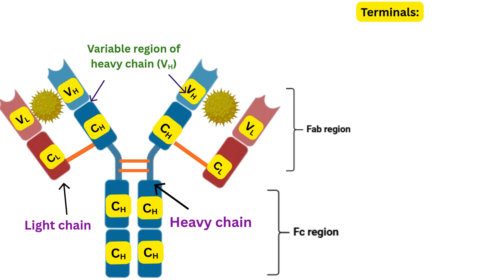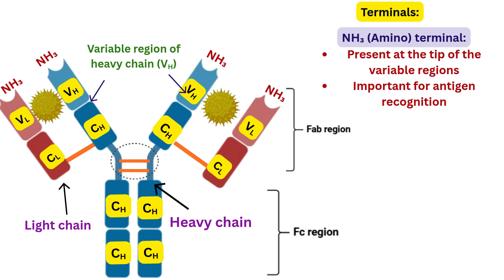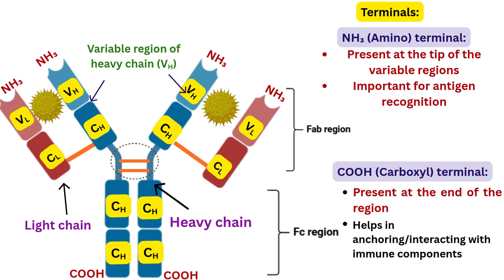The amino terminal is present at the tip of the variable region, and the carboxyl terminal is present at the base of the FC region. There is a hinge region between the FAB and FC portion, which provides flexibility allowing the antibody to move its arms and bind antigen at different angles. This is a complete structure of an antibody.